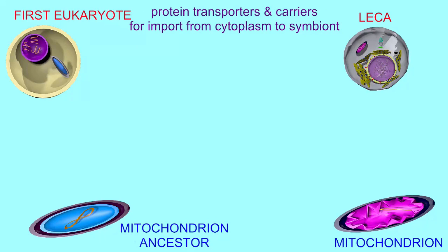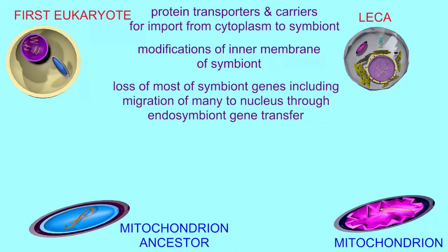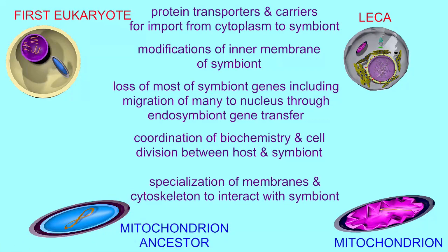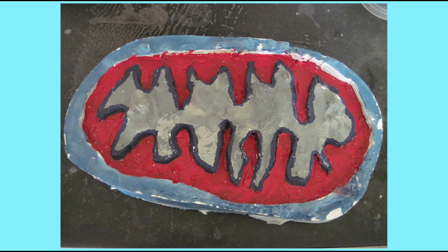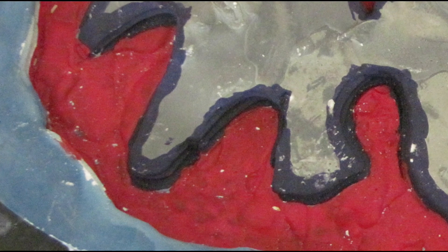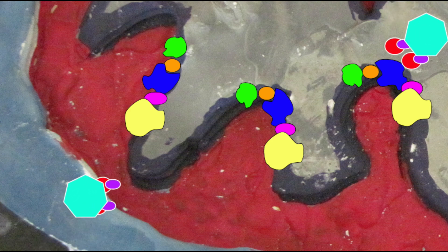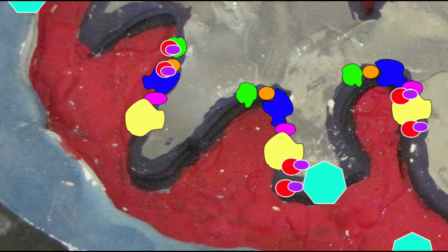It is perhaps easier to study the changes which would have to occur from the ancestor of the mitochondrion to become the mitochondrion with which we are familiar. It started off as an independent, free-living eubacterium, but it would become an endosymbiont dependent on its host. For this, there would have to be the development of protein transporters and carriers to import proteins from the cytoplasm to the symbiont.